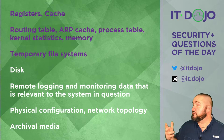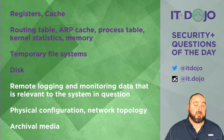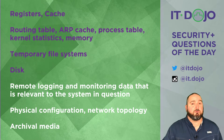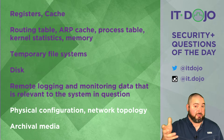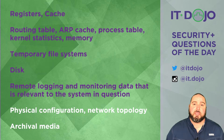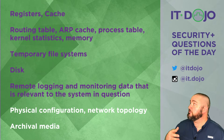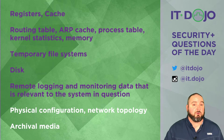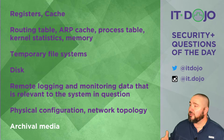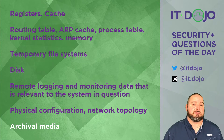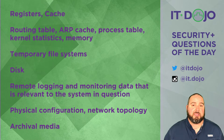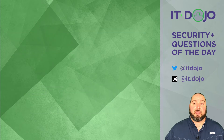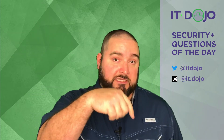Fourth in the order of volatility is your disk — whether a spinning hard disk or solid-state drive. Fifth is remote logging and monitoring data relevant to the issue at hand — off-system data you can retrieve later. Sixth is the physical topology of your network and its configurations. And the very last, least volatile item is archival media — your backups and other long-term storage used to recover data.